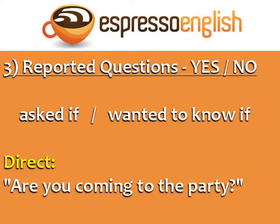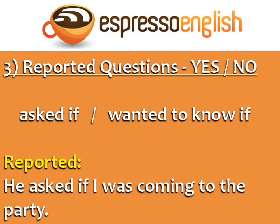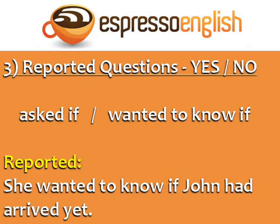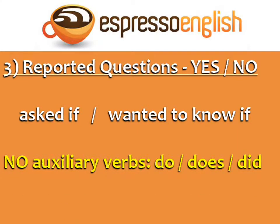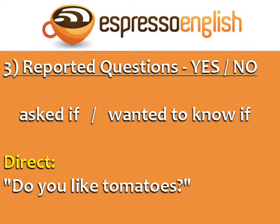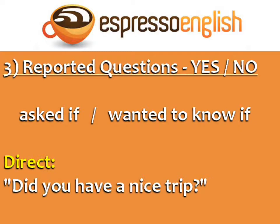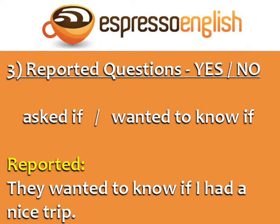Reported questions — yes or no questions. Use 'asked if' or 'wanted to know if' in the reported question. Direct: 'Are you coming to the party?' Reported: 'He asked if I was coming to the party.' Direct: 'Has John arrived yet?' Reported: 'She wanted to know if John had arrived yet.' In reported yes/no questions, we don't use the auxiliary verbs do, does, or did. Direct: 'Do you like tomatoes?' Reported: 'She asked if I liked tomatoes.' Direct: 'Did you have a nice trip?' Reported: 'They wanted to know if I had a nice trip.'